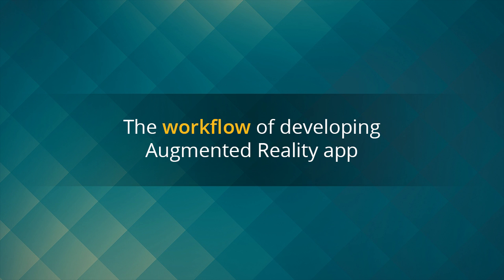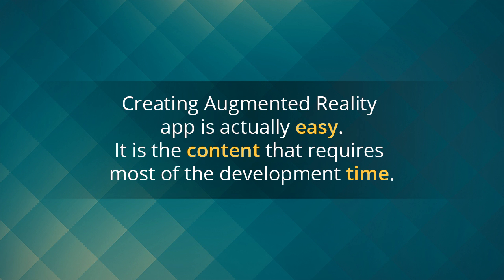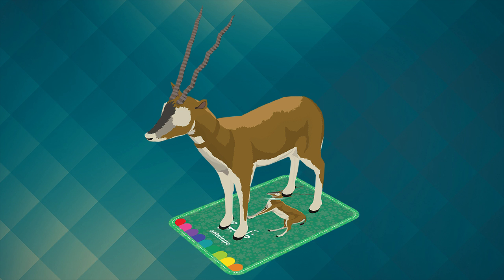First, we're going to cover the workflow of how to develop an augmented reality product. Making a working augmented reality app is actually pretty simple and easy, because there are dozens of AR tech providers which make the technology easy for us to use. They work so hard to make the underlying sophisticated part of the technology hidden, so everything is simple on the surface. The first hardest part of making an AR product is actually developing the content, which in our case is the 3D object and its animation. That is why most parts of this tutorial are about 3D content development.